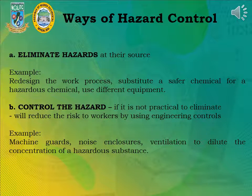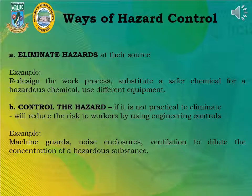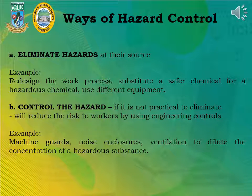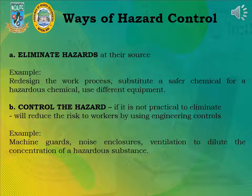Ways of hazard control — A. Eliminate hazards at their source. Example: Redesign the work process, substitute a safer chemical for a hazardous chemical, or use different equipment. B. Control the hazard — if it is not practical to eliminate it, reduce the risk to workers by using engineering controls. Example: Machine guards, noise enclosures, ventilation can dilute the concentration of a hazardous substance.